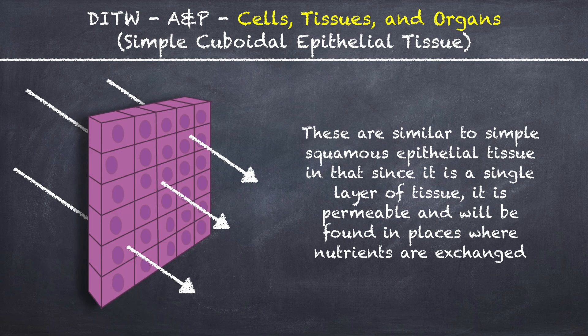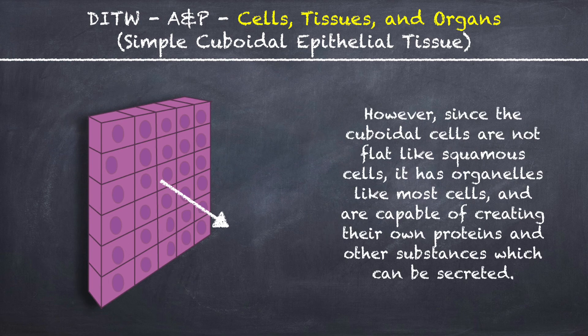These are similar to simple squamous epithelial tissue in that since it is a single layer of tissue, it is permeable and will be found in places where nutrients are exchanged. However, since the cuboidal cells are not flat like squamous cells, they have organelles like most cells and are capable of creating their own proteins and other substances which can be secreted.